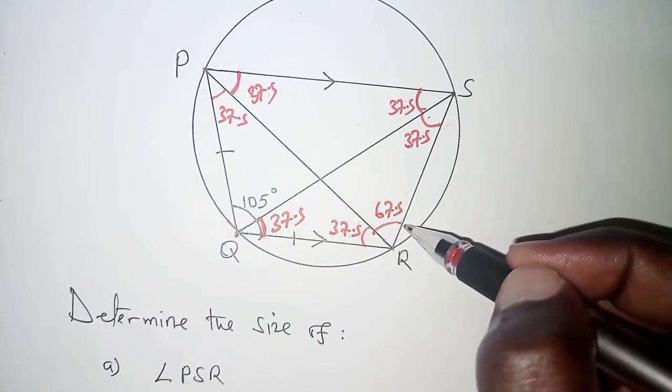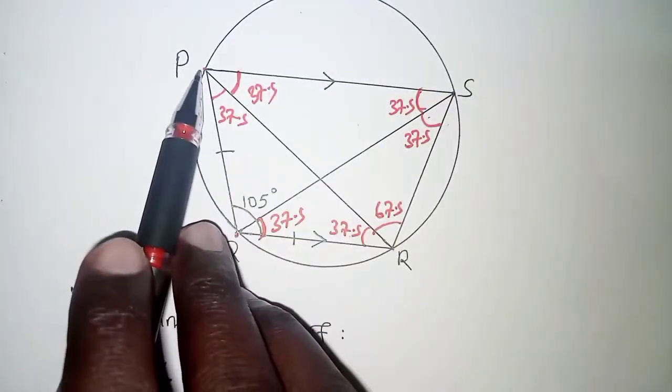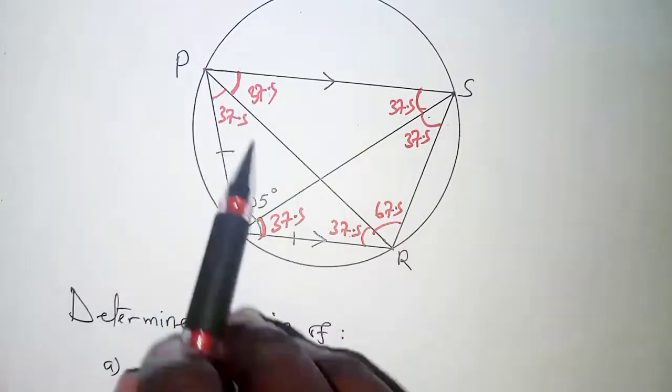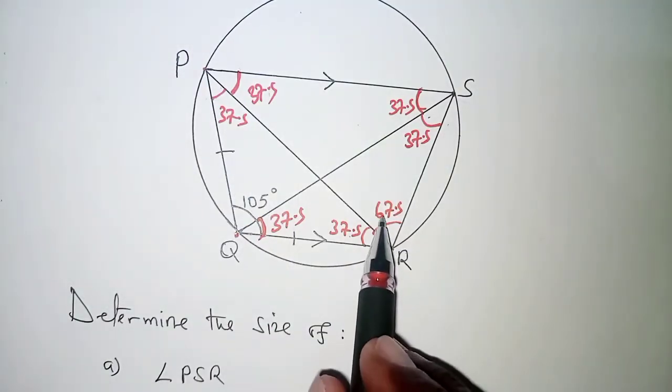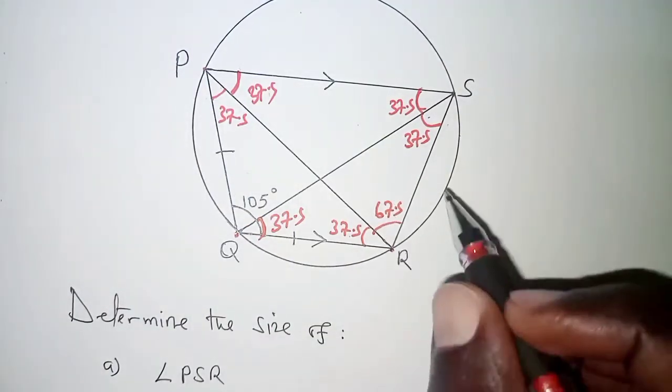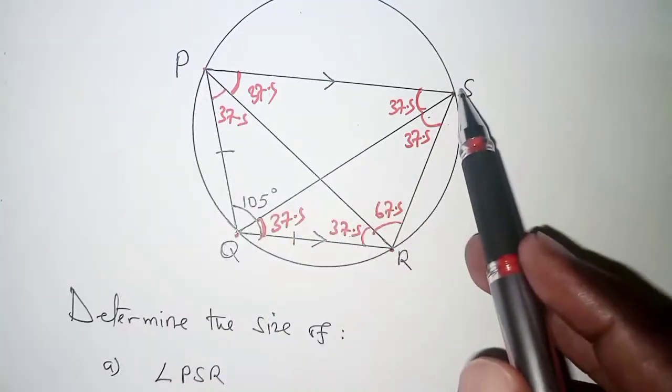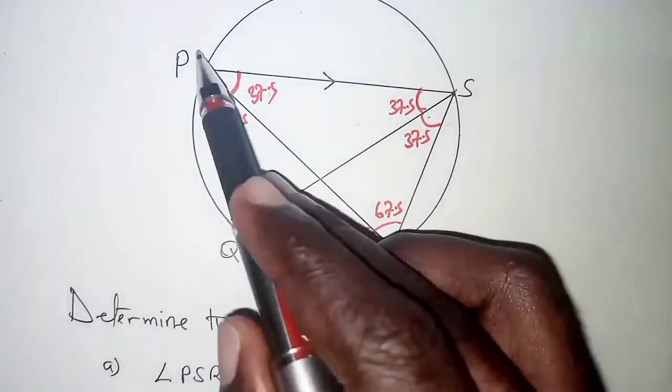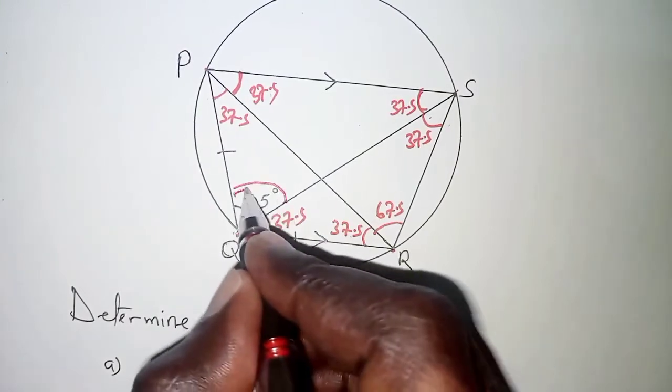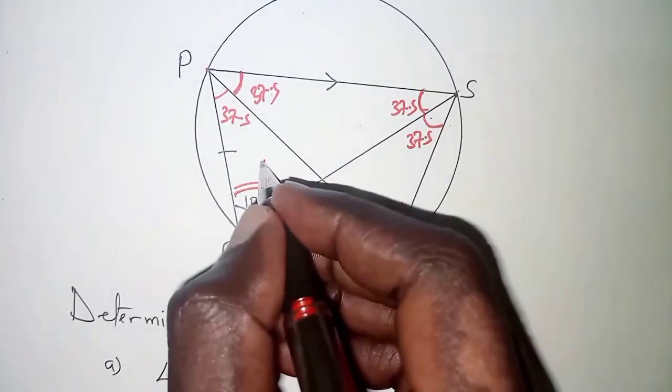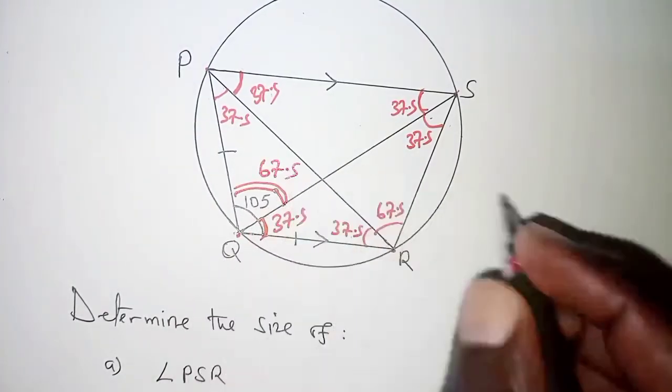Finally if this is 67.5 we have chord PS. Chord PS subtends angle 67.5 at point R. The same chord PS will come and subtend an angle right here at point Q and that should be the same 67.5.